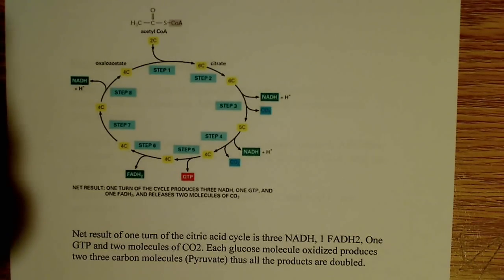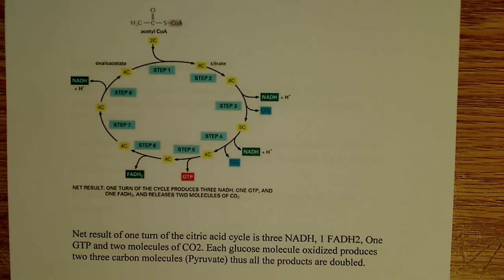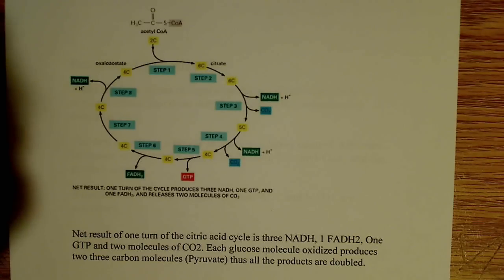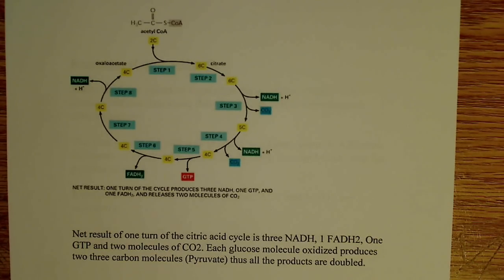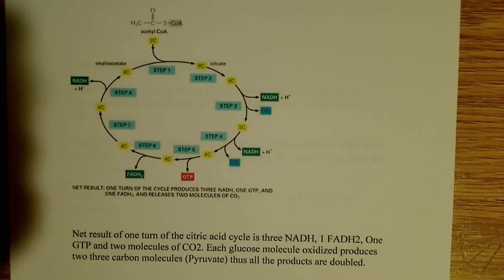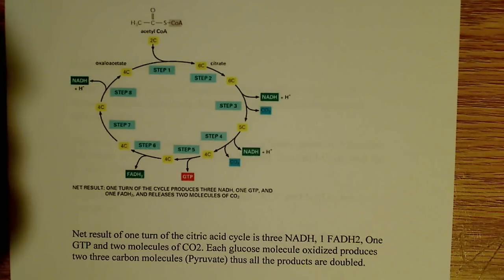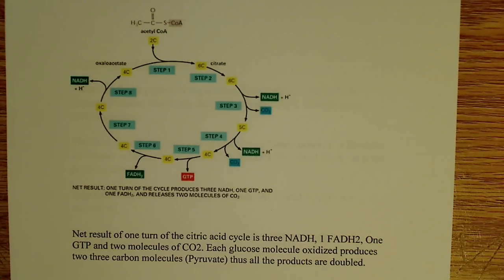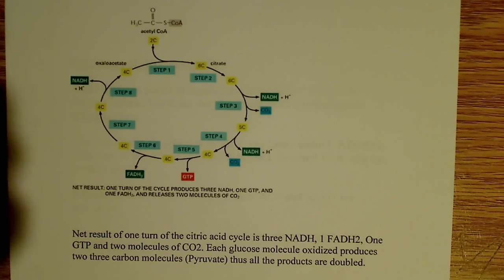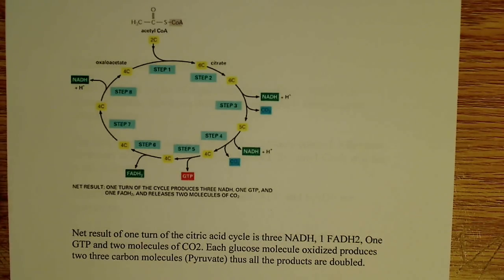In step five, we have the formation of succinate and GTP. All of the oxidative decarboxylation steps are important, but this one is also important because we produce GTP. GTP can be easily converted by another enzyme to ATP, so producing GTP is essentially no different than producing ATP — it's a high-energy molecule that can be used for energy in the cell. Succinyl-CoA plus GDP plus inorganic phosphate gives us succinate — a four-carbon molecule — one GTP, and one CoA. The enzyme that catalyzes this is succinyl-CoA synthase.